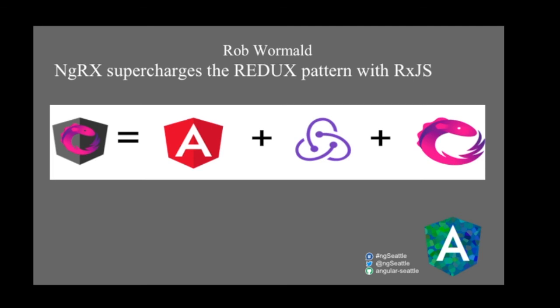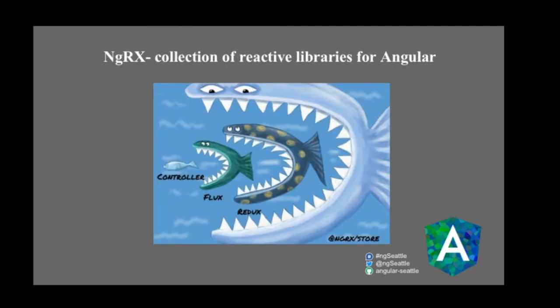Rob Wormald looked at Redux, which was using callbacks at the time, and decided to use observables instead. He combined Redux with observables and Angular and called it NgRx — the best of all three. NgRx started with Flux, then Redux (99 lines of code), and with observables, you can now accomplish the same thing in just two lines of code. Today, NgRx is a collection of reactive libraries for Angular.